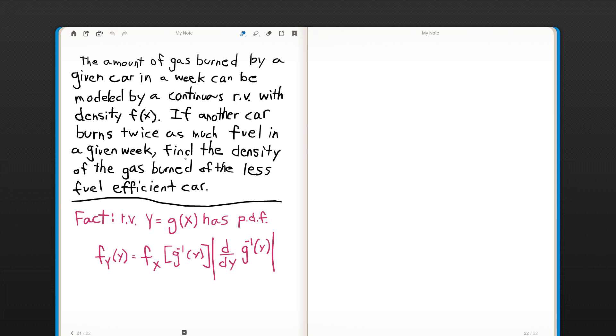So sometimes these actuarial problems are not necessarily abundantly clear, but you have to work with what you have. Here the situation is basically you have to interpret this as a transformation problem. If the one given car burns x amount of fuel, then the other car, less efficient car, will burn twice as much. So we know what the density of x is, and we just need to find the density of 2x.